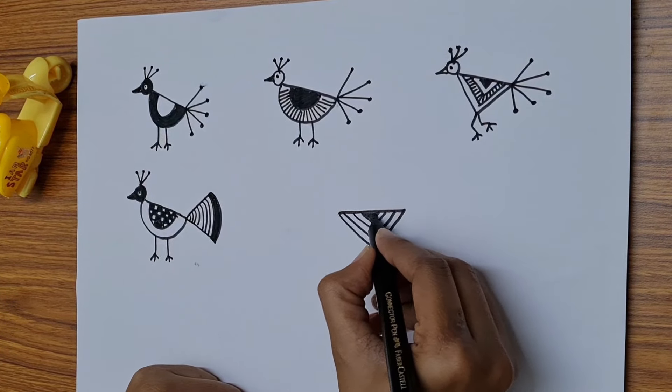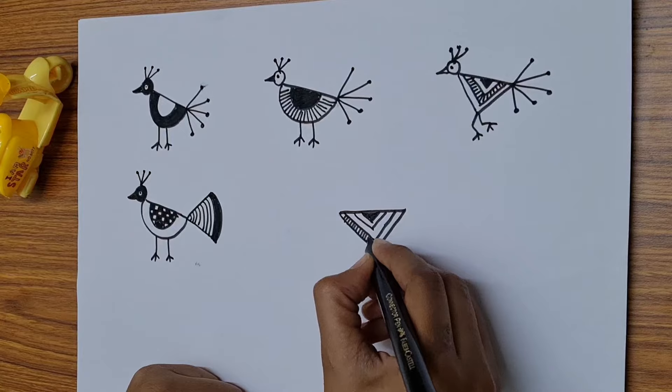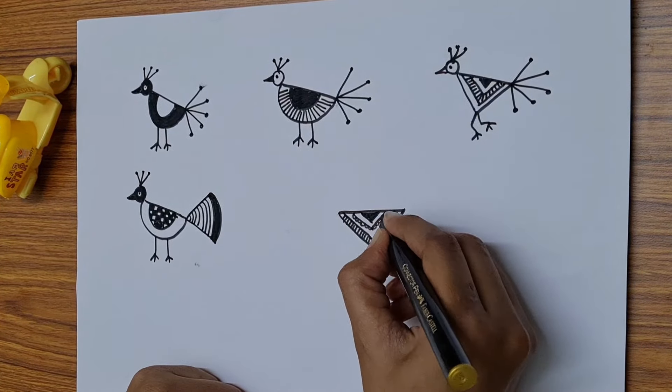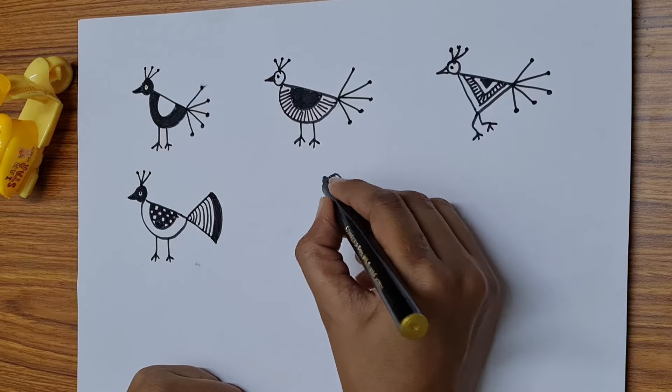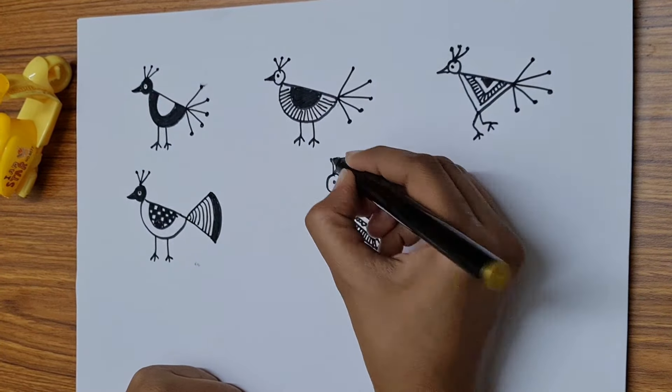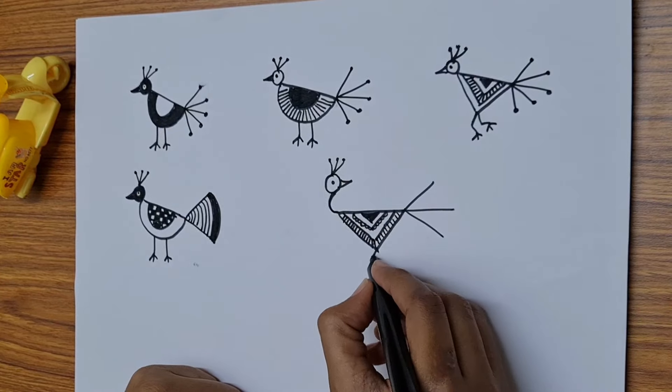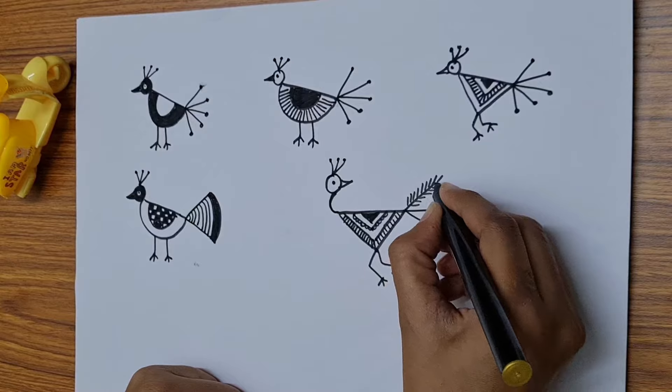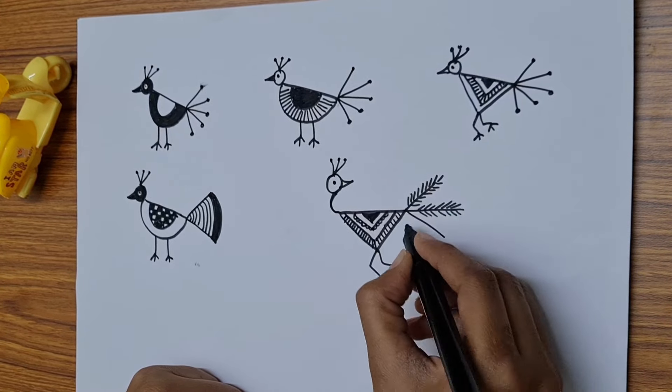When you want a peacock to be more live and seeing somewhere in an art, in the middle of the art, you can try this one. Drawing the beak on the other end will look like the peacock is really live and looking at something.